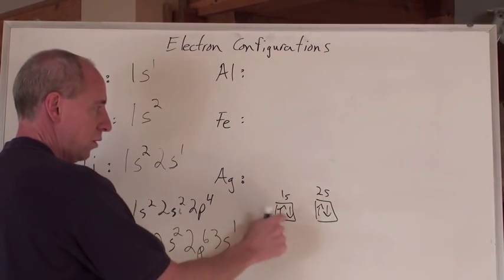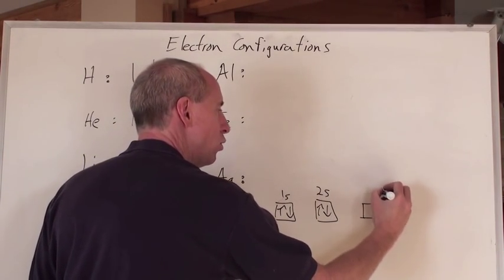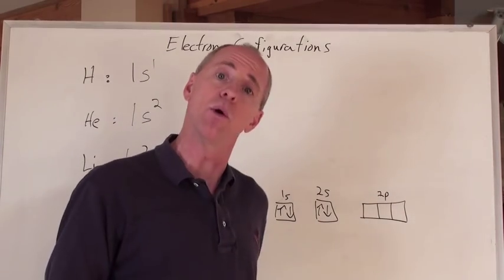That's 1s2, 2s2, and in the 2p, at the 2p level, there's the x, y, and z sub orbitals.